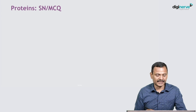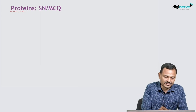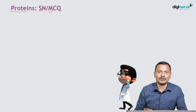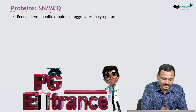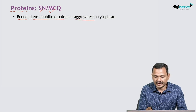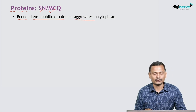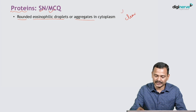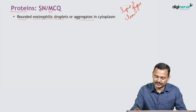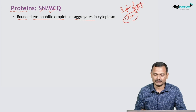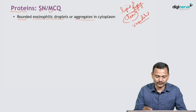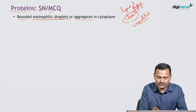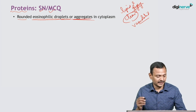Now we move on to our next deposit: proteins. Proteins appear as rounded eosinophilic droplets or aggregates in the cytoplasm. Lipids and glycogen will appear as clear or vacuolated cytoplasm, whereas proteins will appear as eosinophilic droplets or aggregates.